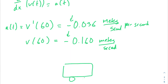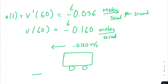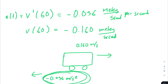Going back to the car example: the velocity is negative 0.160 meters per second, meaning the car is traveling backward. The acceleration is also negative 0.036 meters per second squared, meaning it's accelerating in the negative direction — so it's speeding up. If either the velocity or acceleration had opposite signs, we would say it's slowing down. Since they have the same sign, Stephen is speeding up.